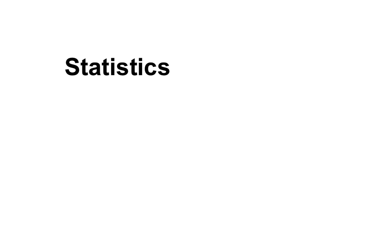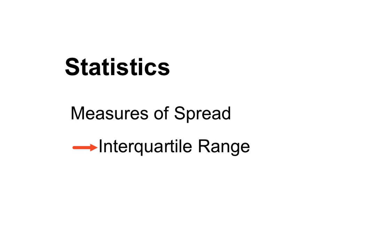This statistics video explores the idea of interquartile range. It's another measure of the spread of a bunch of scores — how spread out scores are — and it's called the interquartile range.